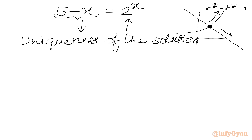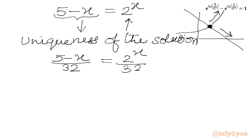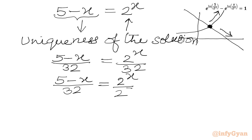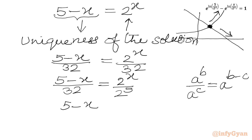Now I will divide both sides by 32. So (5 - x) divided by 32 will equal 2^x divided by 32. Since 32 = 2^5, I can write the right side as 2^x divided by 2^5, which equals 2^(x - 5).